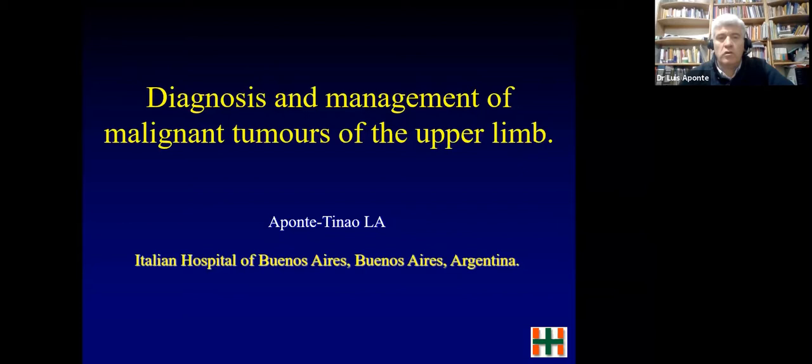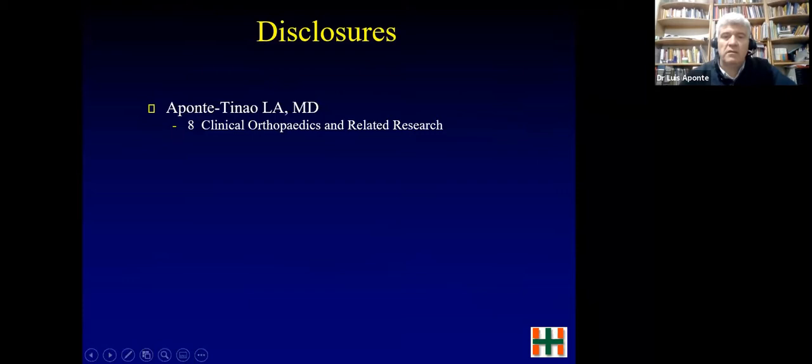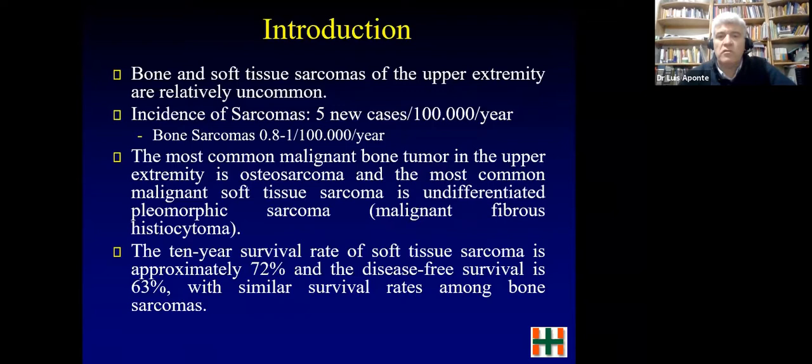We're going to talk today about diagnosis and management of malignant tumors of the upper limb. Bone and soft tissue sarcomas of the upper extremity are not uncommon, but they are less common than in the lower limb. In general, the incidence of sarcomas is five new cases every 100,000 inhabitants per year.